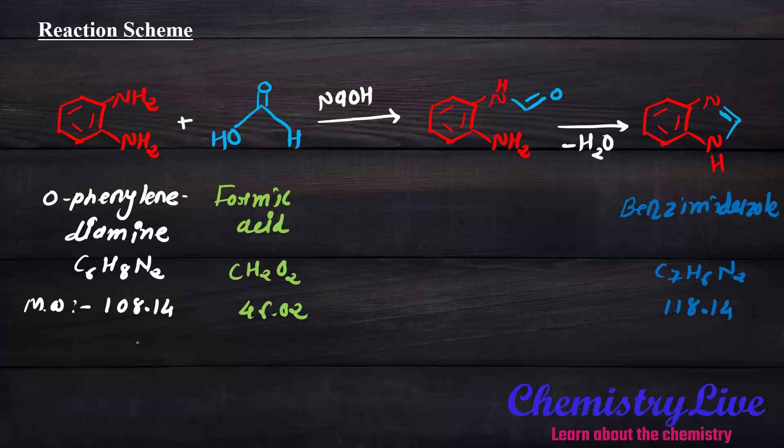Now we will switch to the reactions. It is a very simple reaction scheme. Orthophenylenediamine reacts with formic acid in presence of NaOH. We will get the intermediate compound and after removal of water molecule we will get benzimidazole with 118.14 gram per mole molecular weight.